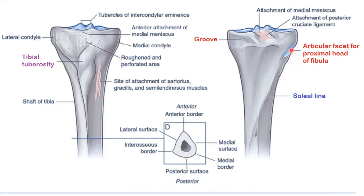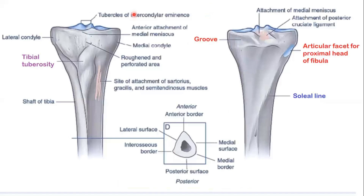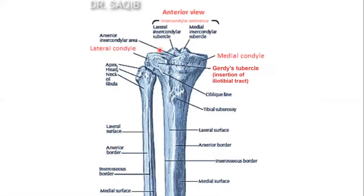These two facets articulate in the superior tibiofibular joint formation. This is the opposite side, and this is the joint made here.